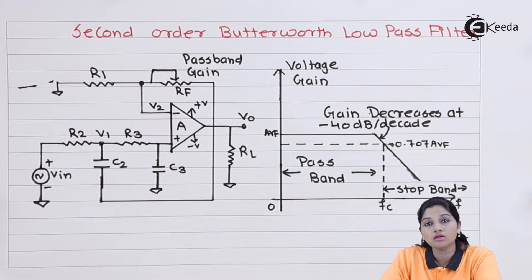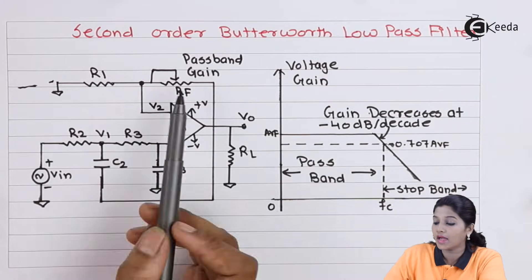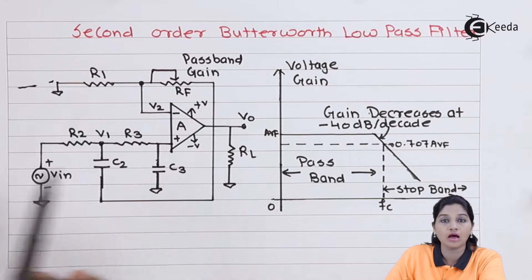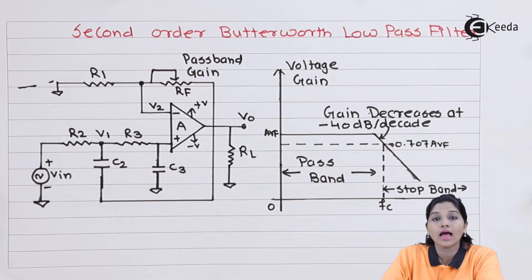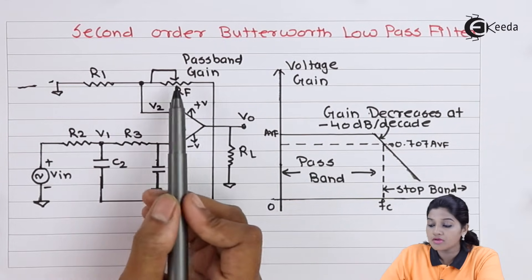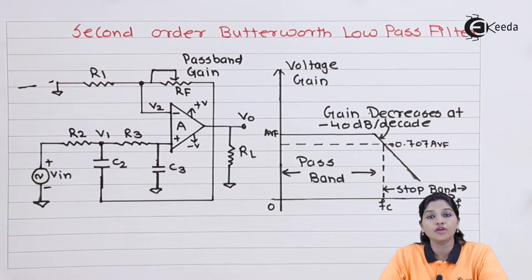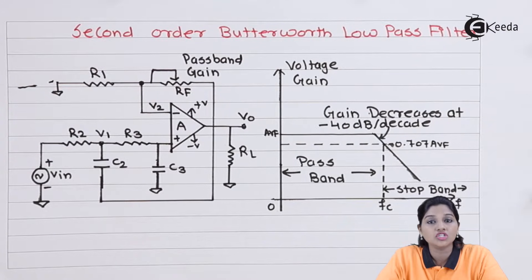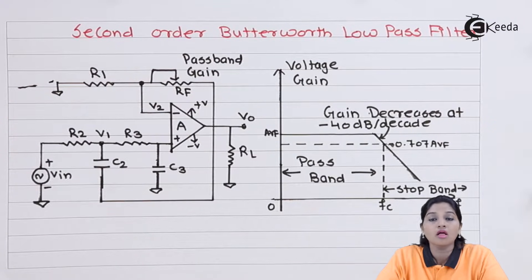The gain of the filter is decided by RF and R1. As RF is used as a variable resistor, the gain of the filter can be changed by changing the value of RF.